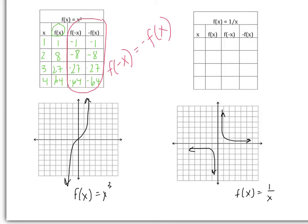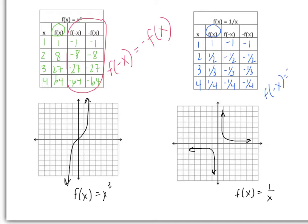The same thing happens for f(x) = 1/x. Plugging in 1, 2, 3, 4 gives 1, 1/2, 1/3, 1/4. Plugging in negative values gives −1, −1/2, −1/3, −1/4. Taking f(x) and multiplying by −1 also gives −1, −1/2, −1/3, −1/4. So again, f(−x) equals −f(x). We have two graphs for which this is true.